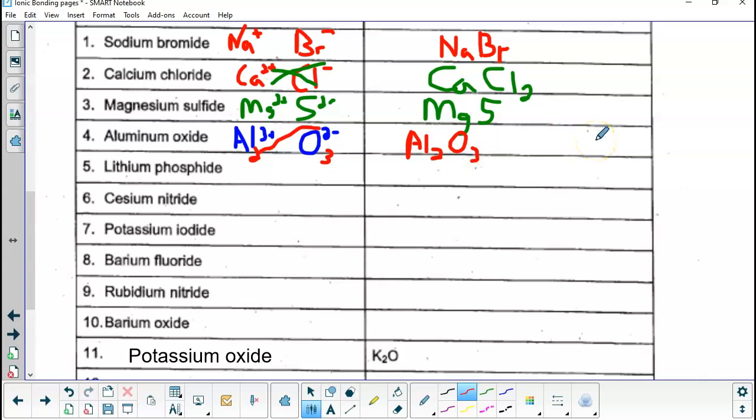For all of these problems here, one through 10, you want to start by looking up the symbol and the charge on the periodic table. If they cancel out, just write the symbols down next to each other and make sure the metal always goes first. If they don't cancel out, then do the crisscross method and write your formula with the subscripts.